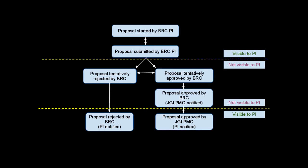Until a decision is finalized, a proposal can be moved between rejected and approved without the PI being notified. When a rejection is finalized or the proposal is approved by the JGI PMO, the PI will see the status change from submitted to approved or rejected.